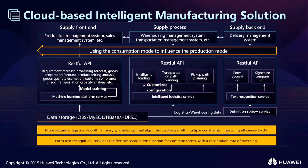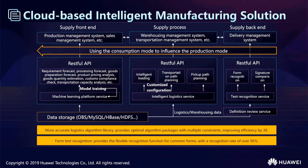This is about a cloud-based intelligent manufacturing solution. It covers all supply chains including the full production process. Based on large algorithm libraries, constraint handling, and intelligent text recognition capabilities through APIs, it provides a company production management system, sales management system, warehouse management system, transportation management system, and delivery management system. It can help companies solve problems such as demand forecasting, production forecasting, pick-up planning, and signature comparison.